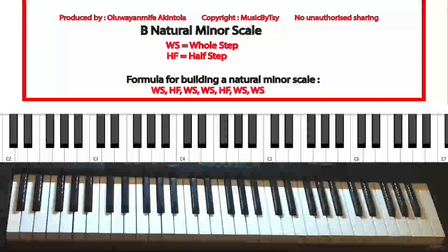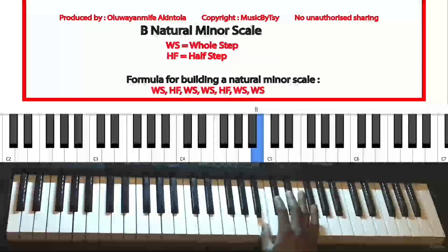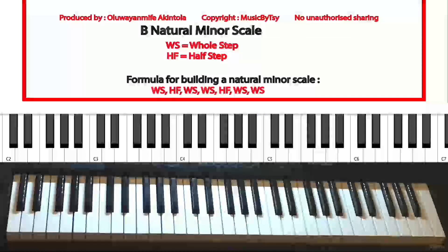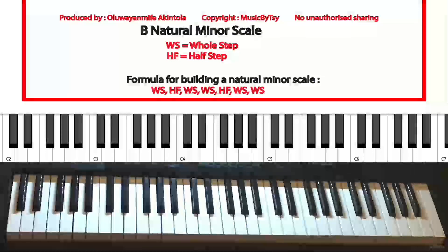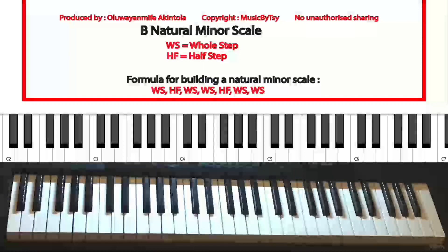What's up guys, welcome to this lesson. In this lesson we're going to be learning about the B natural minor scale. In order to build a natural minor scale for any key, there are two methods we can use. The first method uses our knowledge of the relationship between major scales and natural minor scales. The second method uses the formula. In this video we're going to be using both methods.